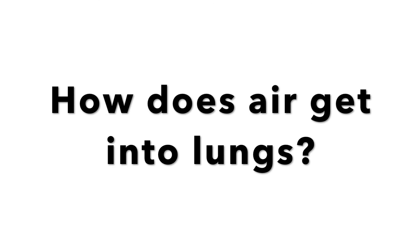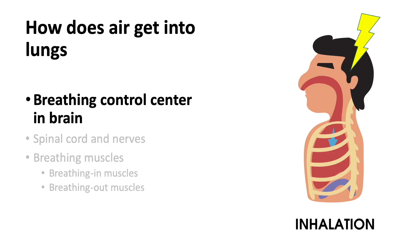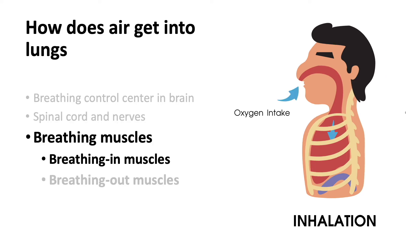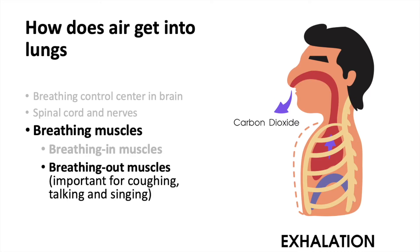How does air get into the lungs? There is a breathing control centre in the brain. This fires regularly and sends signals down the spinal cord, to the nerves, and finally to the muscles. We have two groups of breathing muscles. The breathing-in muscles are used all the time when we breathe, while the breathing-out muscles are used primarily when we breathe hard, when we talk or sing, or when we have to cough.